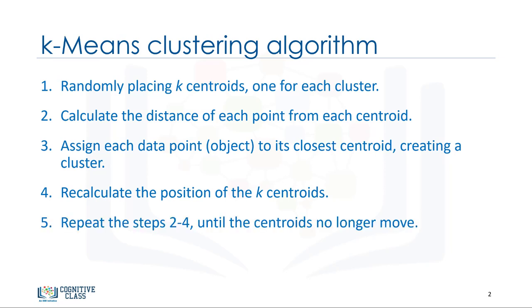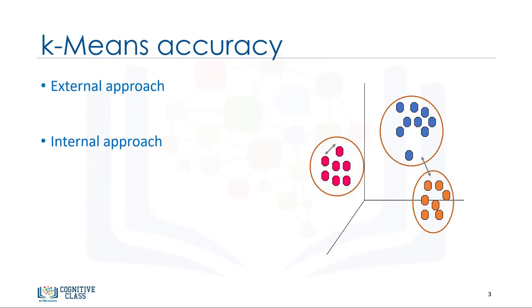Finally, this continues until the centroids no longer move. Now, the question is, how can we evaluate the goodness of the clusters formed by k-means? In other words, how do we calculate the accuracy of k-means clustering?